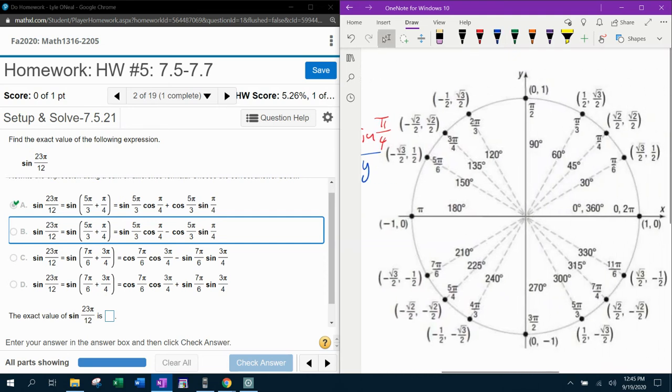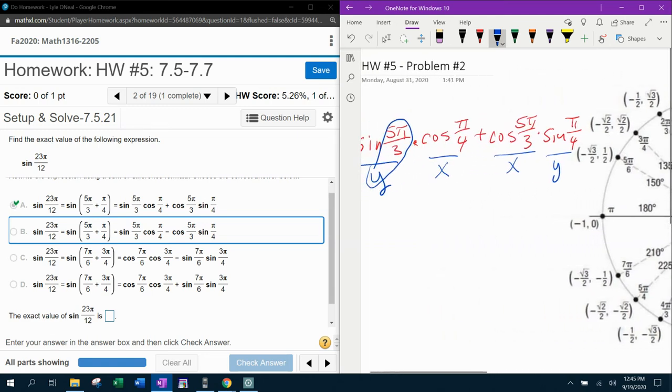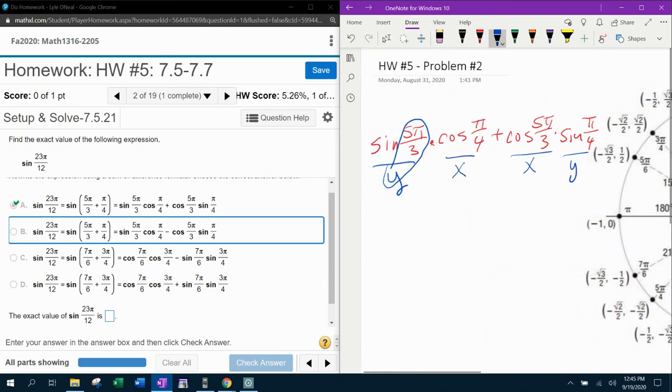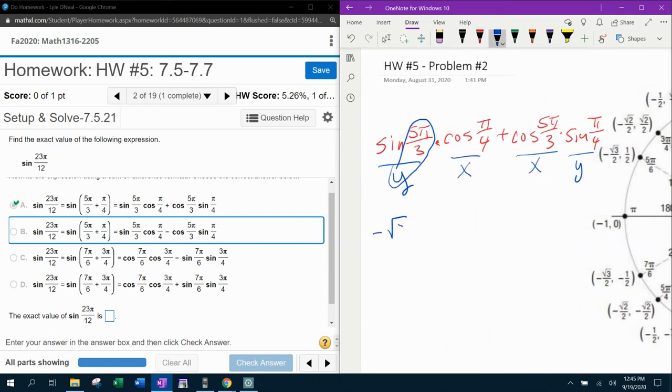So at 5π over 3 down here, I need the y coordinate, which is negative square root of 3 over 2. That is the first piece of the puzzle.